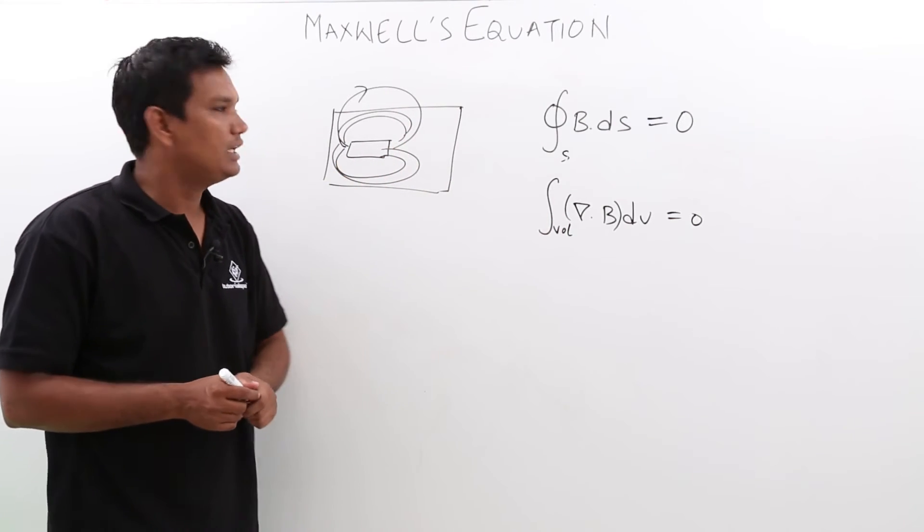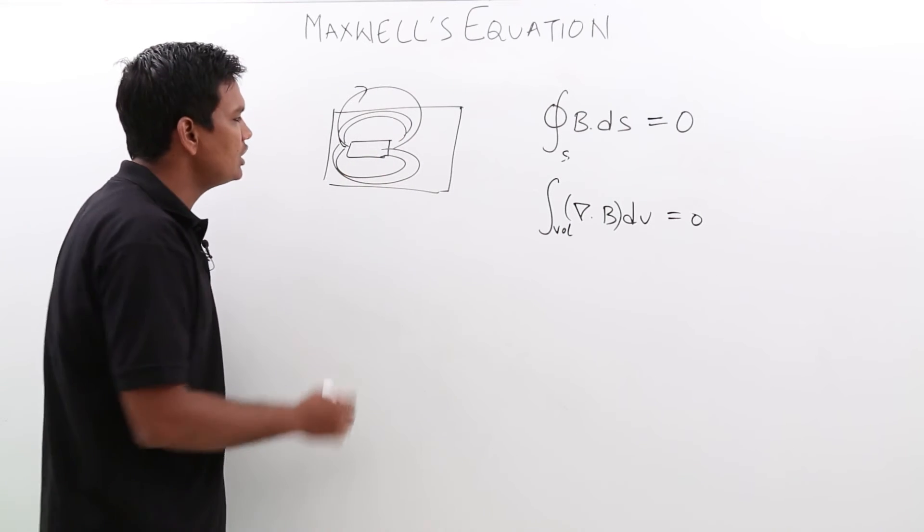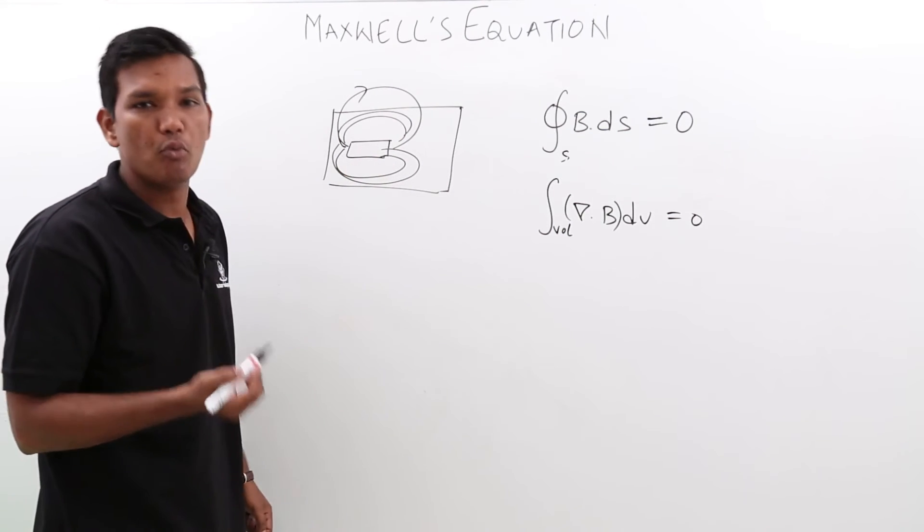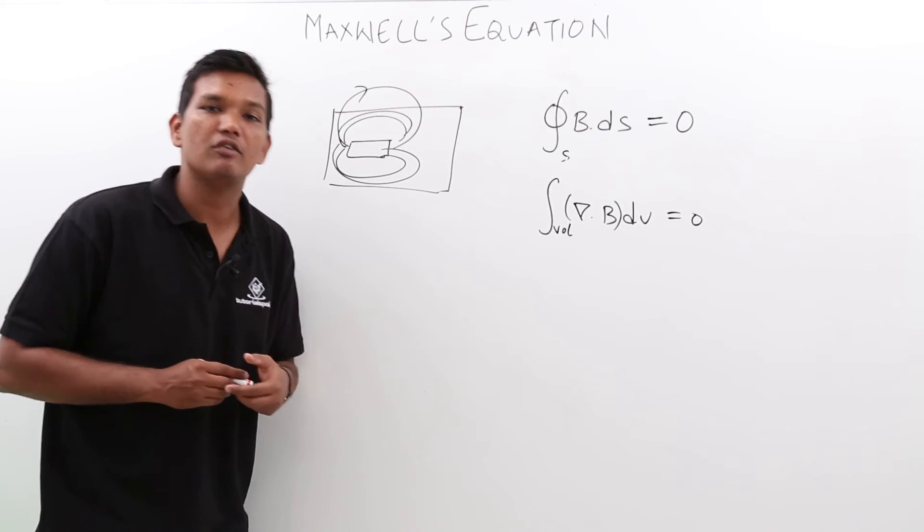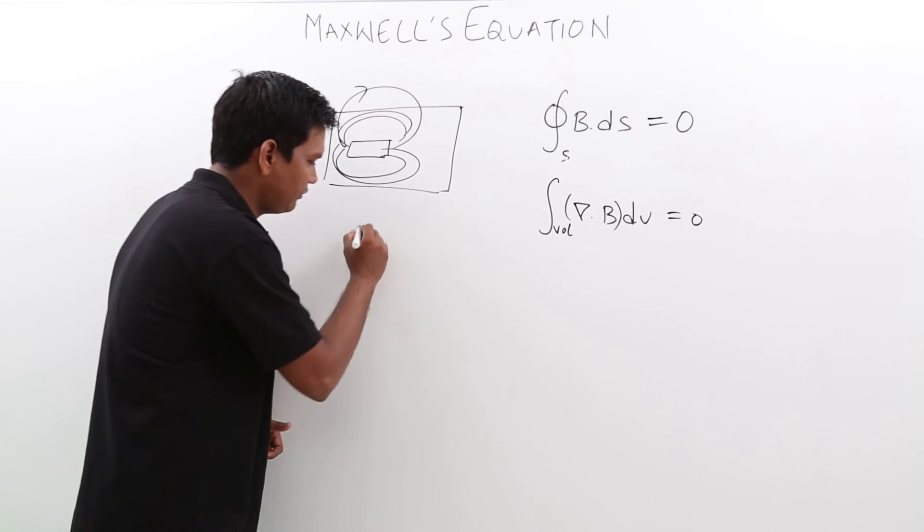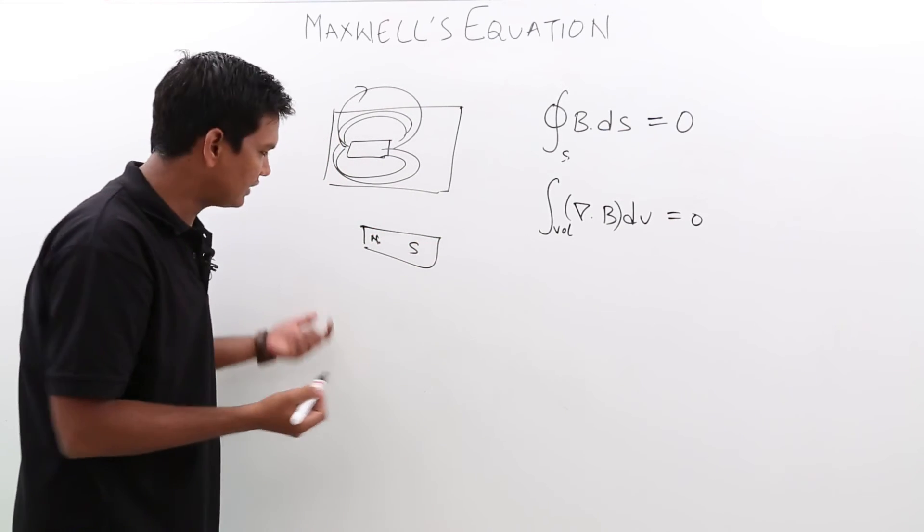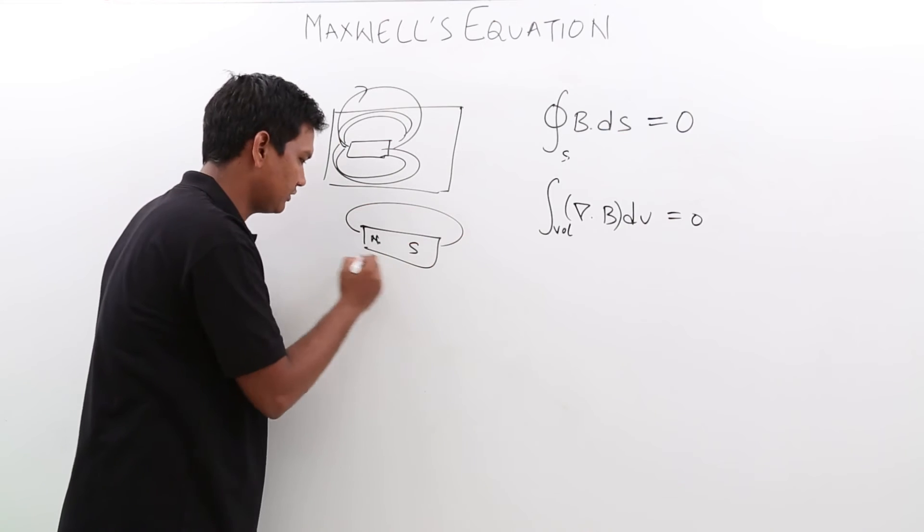In another way, if I want to create the divergence, the only possible way is if you have a monopole, but you cannot create a monopole in case of magnets, right? By default, a magnet will have a north and south. It will have two poles. So that is how the magnetic fields.